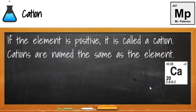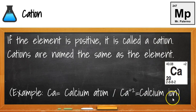The positive ions are called cations. I just think of the T here forms the plus sign, so that's how I know it's a positive ion. When we try to name a cation, we're going to use the full name of the element followed by the word ion. So for example, the calcium atom, Ca, becomes the calcium ion.